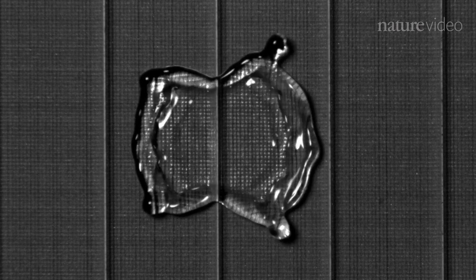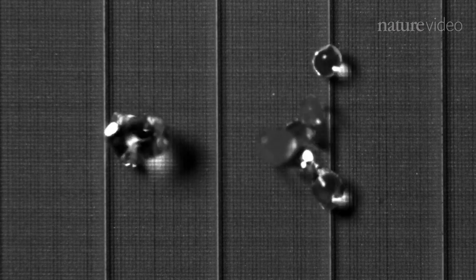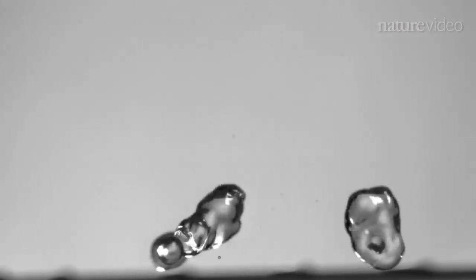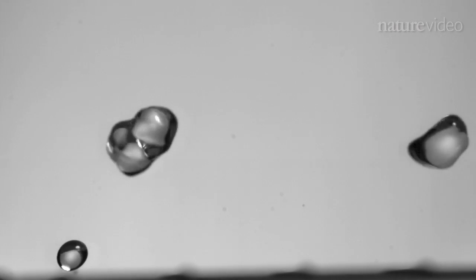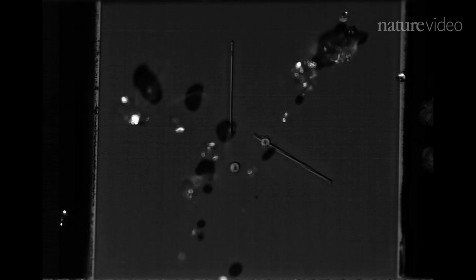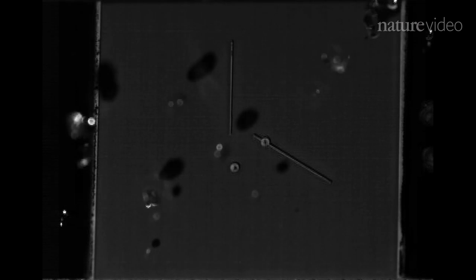With tiny ridges, scientists cause drops to split into smaller drops when they hit the surface. And smaller drops recoil faster than larger ones, so bounce off more quickly. And the less time a droplet spends in contact with the material, the drier it stays.